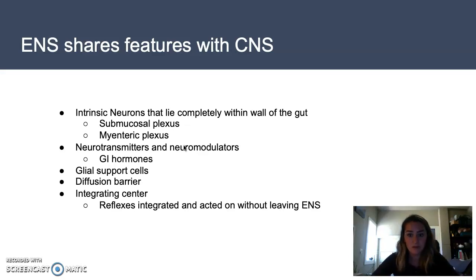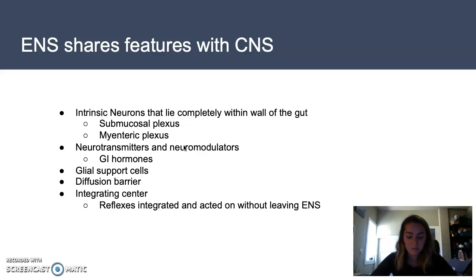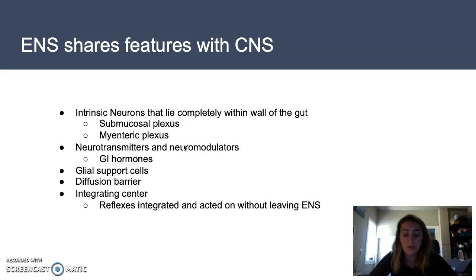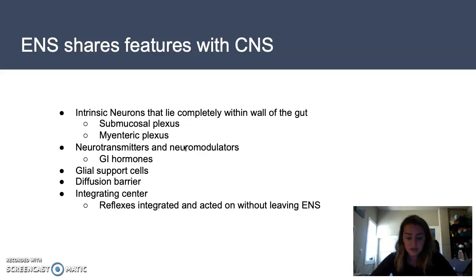Scientists have since discovered many systems and features shared within both nervous systems. First, there are intrinsic neurons that lie completely within the gut wall, much like interneurons that lie completely within the CNS. Primarily, there are two: the submucosal plexus, which is contained within the middle layer of the wall — the submucosa — and is made of connective tissue, large blood vessels, and lymph vessels. The submucosal plexus innervates epithelial and smooth muscle cells in the muscularis mucosa.